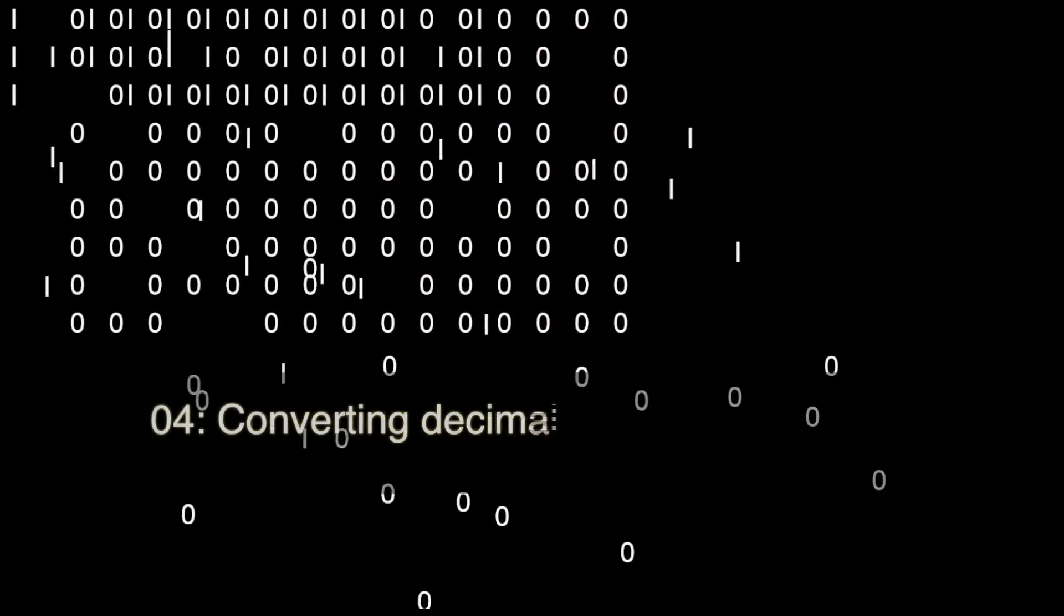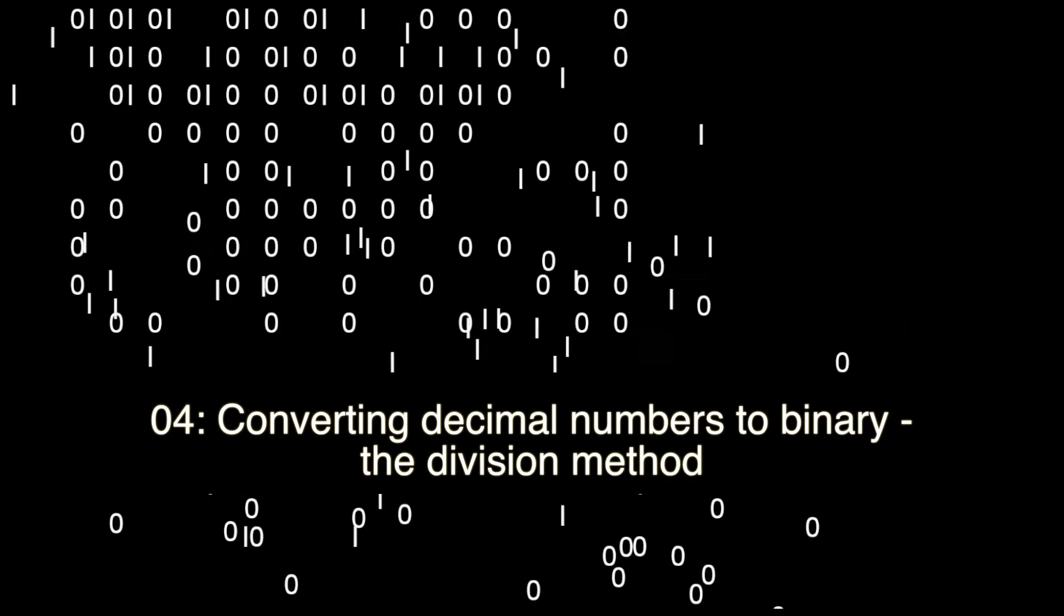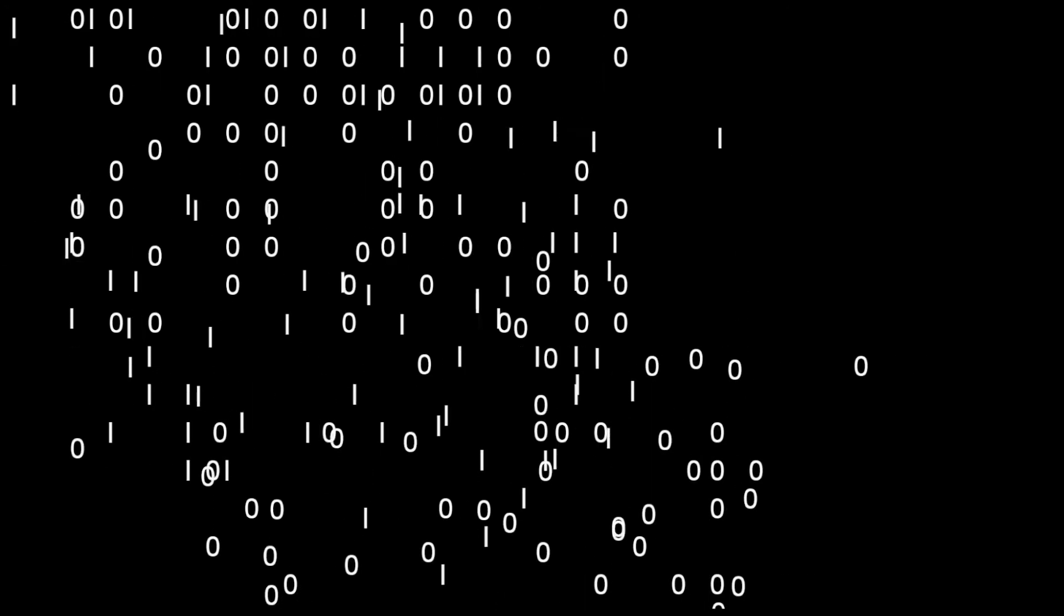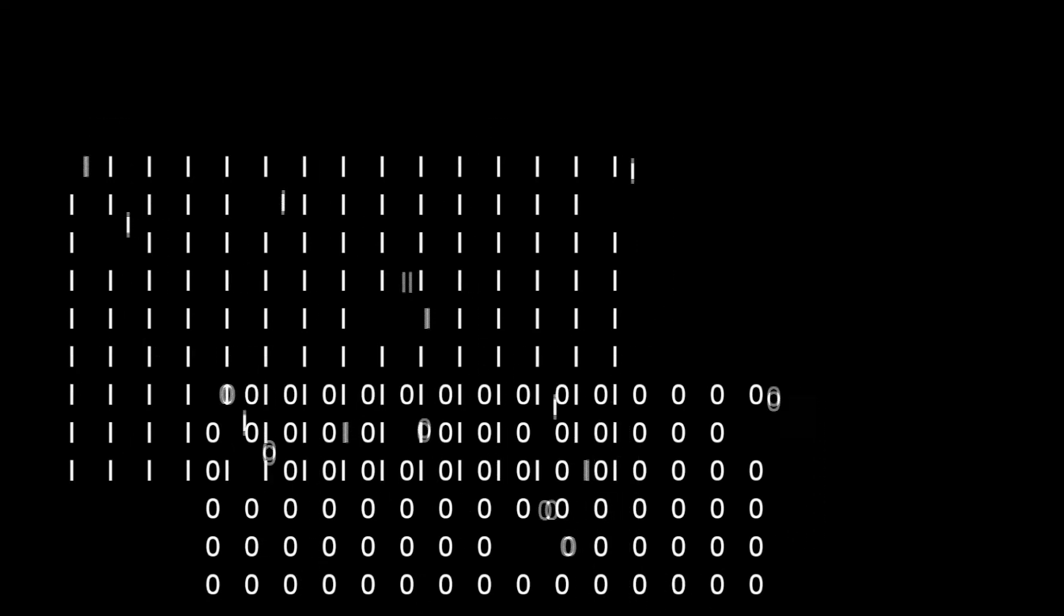Welcome to the fourth video on binary numbers. This video will be about converting decimal numbers into binary numbers, but this video will use a different method called the division method. In this method we're going to exploit the fundamental property of the binary number system that every single place value is a multiple of 2.